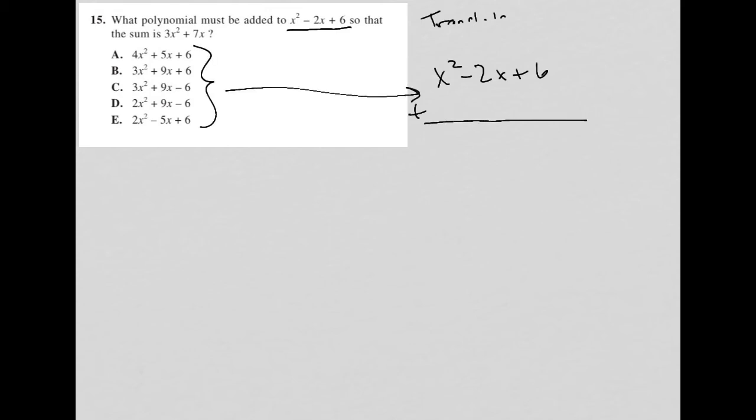is going to lead me to 3x squared plus 7x. So the first thing I notice is that this 6 here is completely gone. So I know that in order for the 6 to be removed, I need to have a negative 6. So even understanding just that gets rid of choice E, choice B, and choice A.